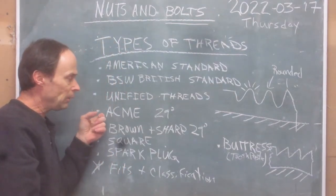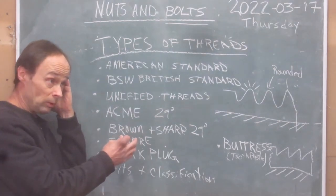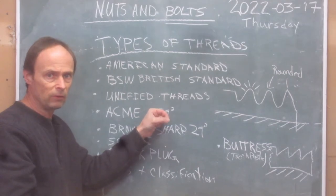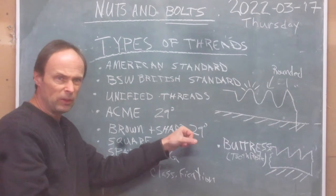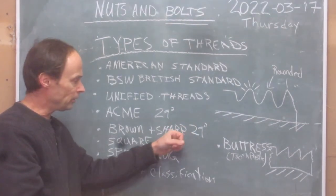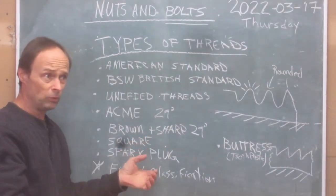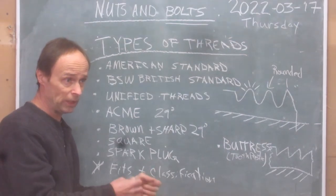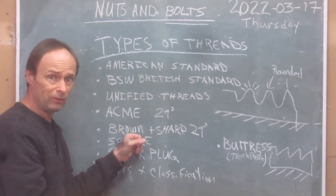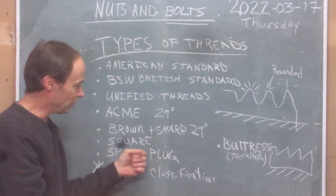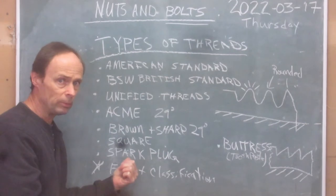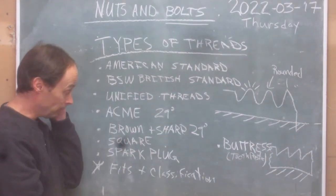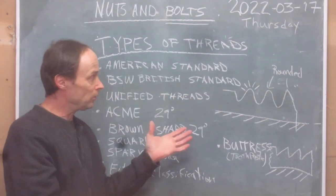Acme threads look like square threads but are more exaggerated — 29 degrees instead of 60. The lead screw on a lathe is an acme thread. Brown & Sharpe also used 29 degrees. Square threads were used for lifting applications like jack screws and hoists; older equipment may have them but most have switched to acme. Spark plug threads are different — the angle is not 60 degrees, so you need to look those up specifically.